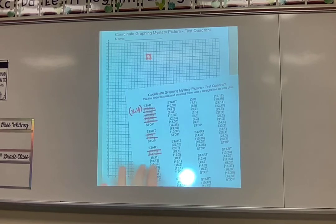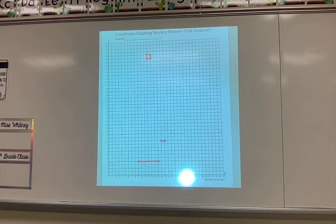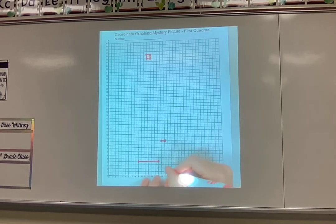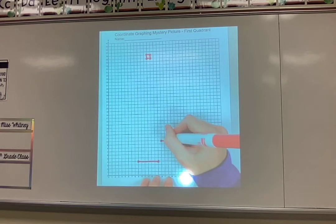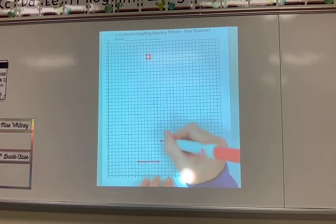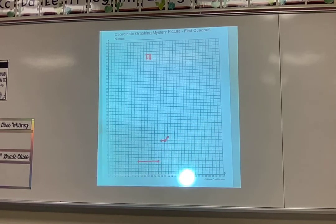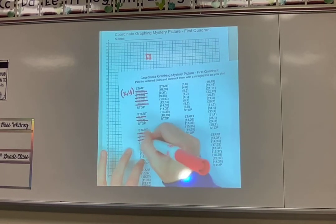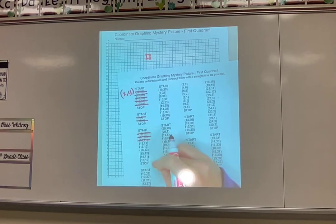And I would go to my next one. Eighteen eleven. So across to eighteen because that's my X. Up to eleven which is right here. And then I'm going to connect that with the last one that I did. So like that. Then I would go back to my page and cross it off. And then I would keep going.